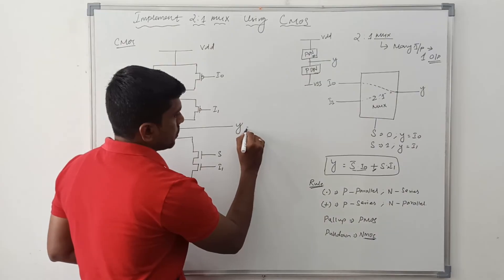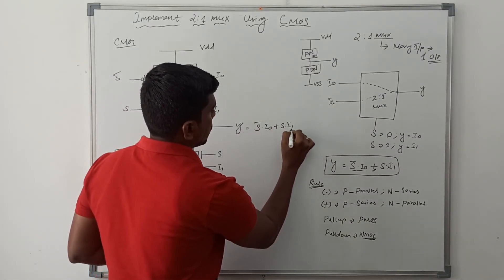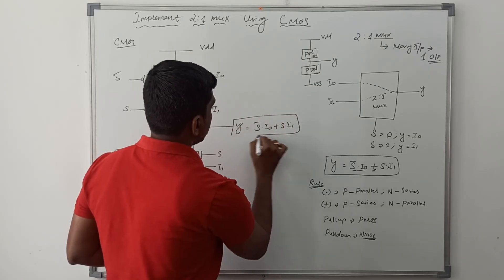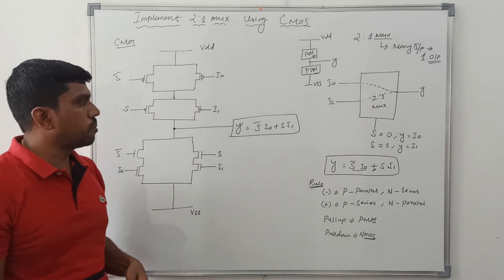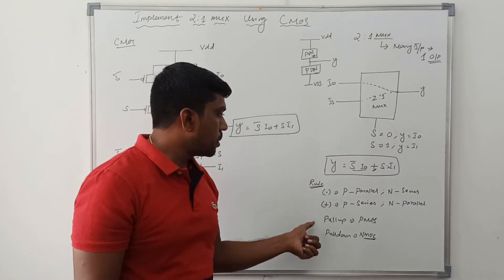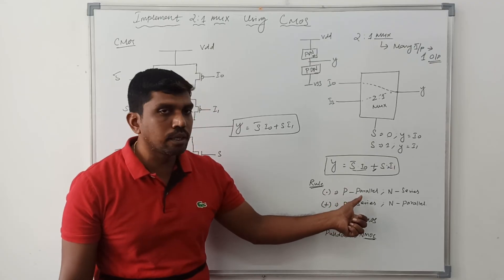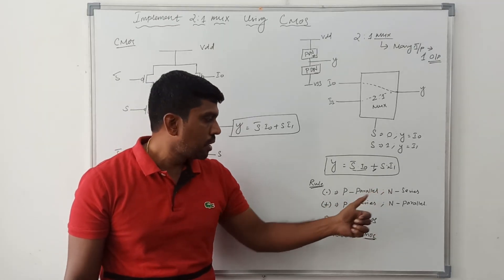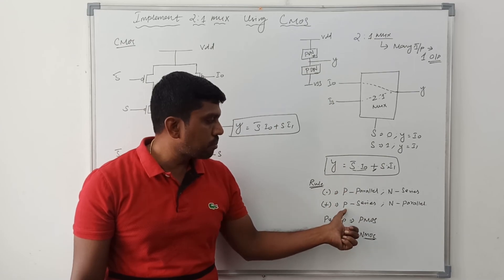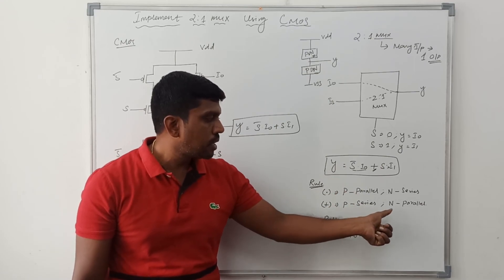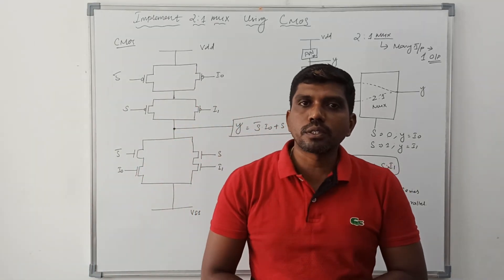Y equals S-bar dot I0 plus S dot I1. This is the simple CMOS structure for 2-to-1 mux. To recall the rule: dot operator present — PMOS transistor connects in parallel, NMOS transistor connects in series. Plus operator present — PMOS transistor connects in series, NMOS transistor connects in parallel.